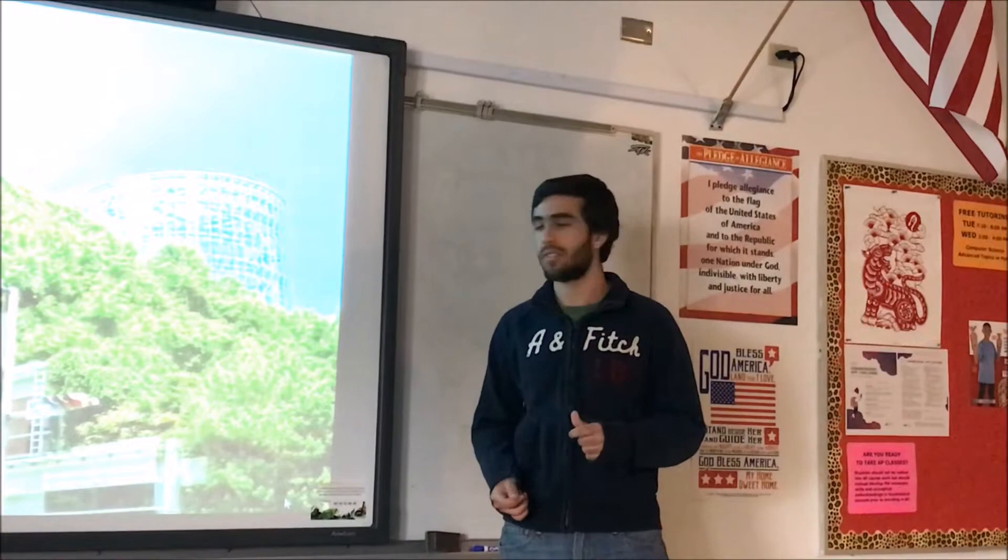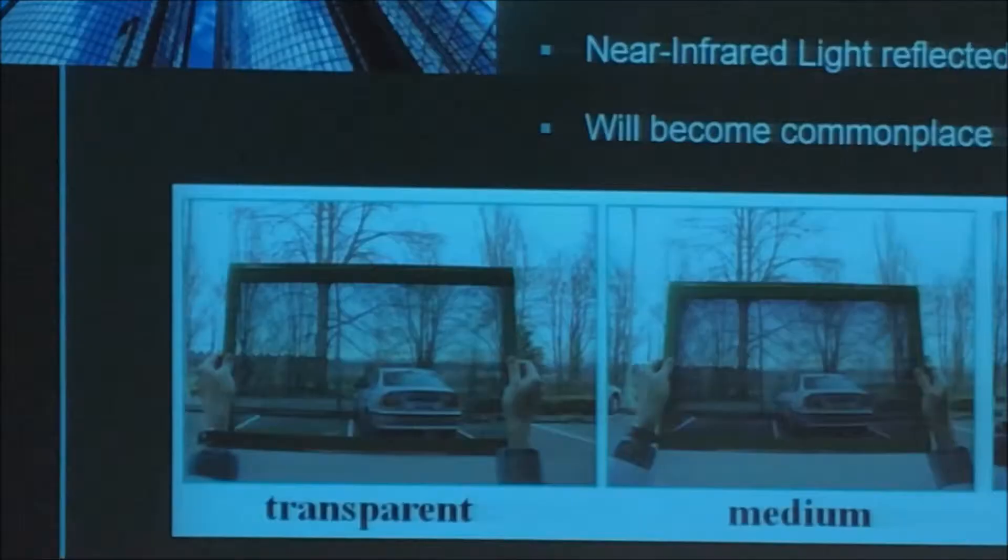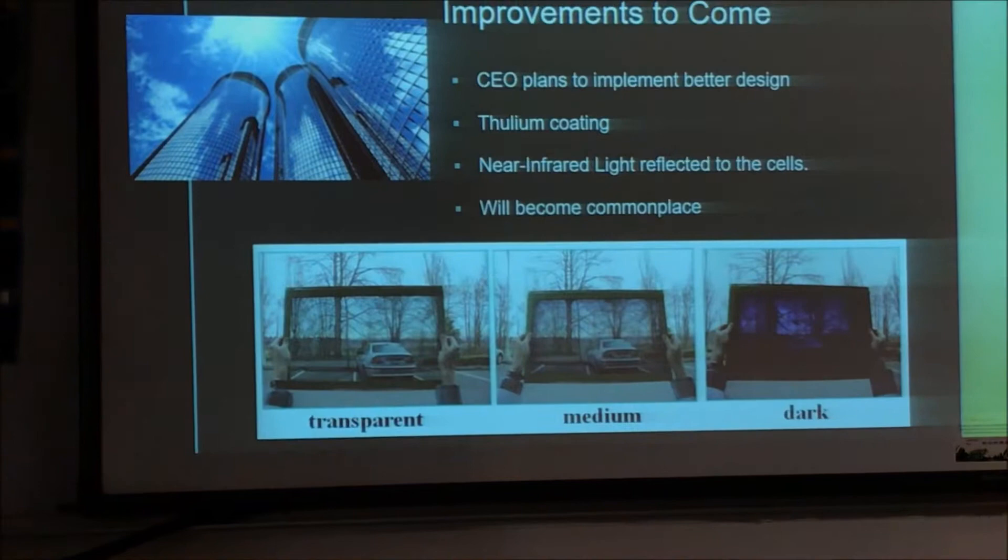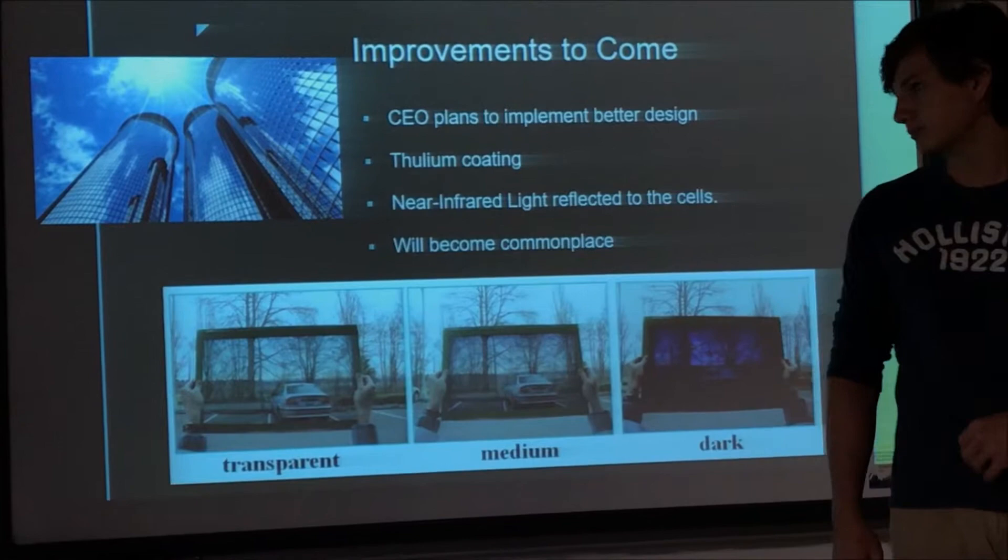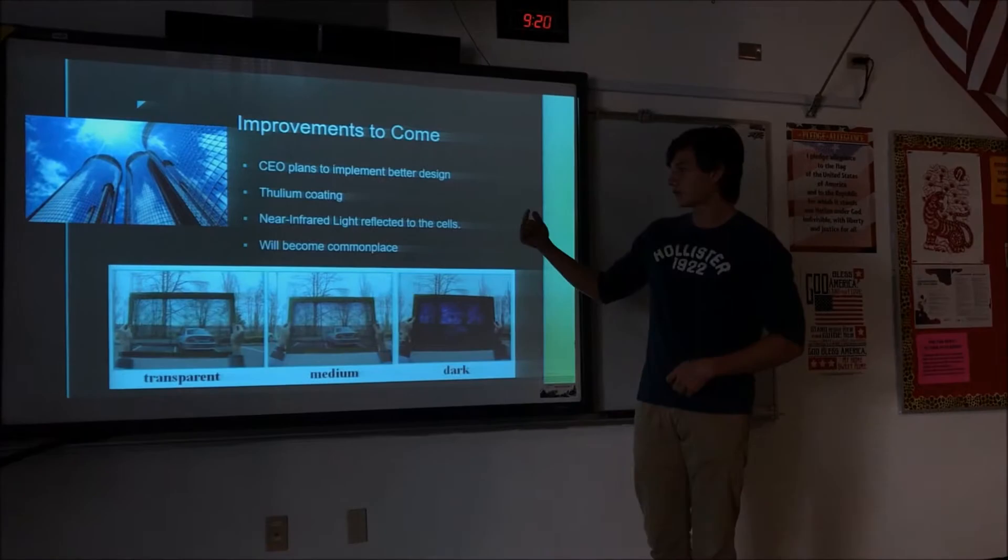So the CEO is hoping to improve this design by coating the windows with a thulium coating. And what this will do is when the light hits the window, it will be turned into infrared light as opposed to visible light. And this will get trapped in the window and reflect off its edges to the side where it'll hit the solar panel.